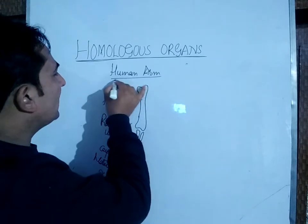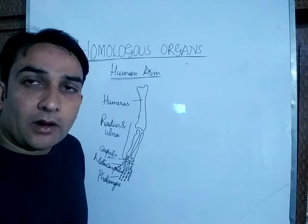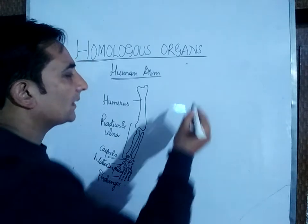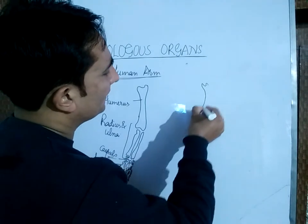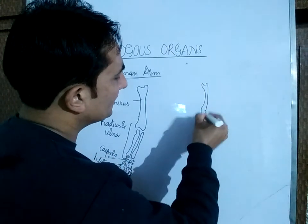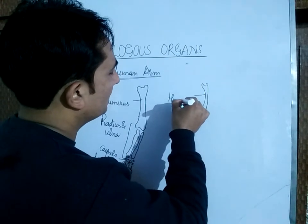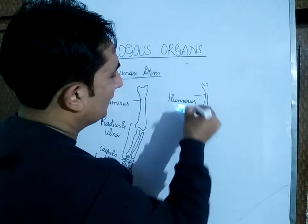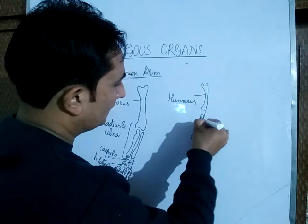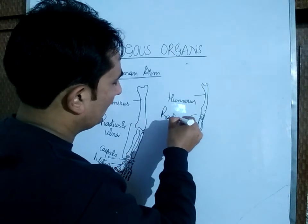This is the basic structural plan or design of the human arm. Now after that we will discuss the wing of the bird. In the wing of the bird you will similarly see there is a bone — this bone is the humerus. Then there are two bones: the radius and ulna.